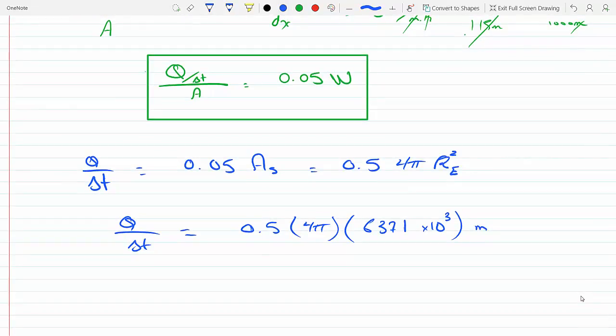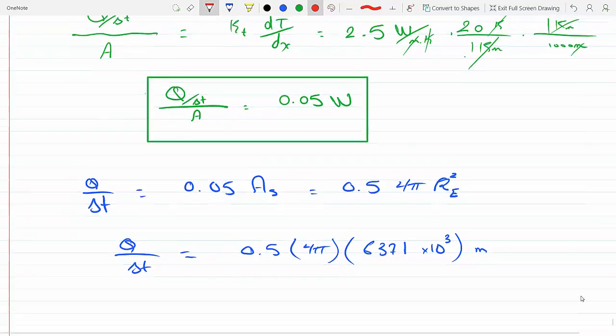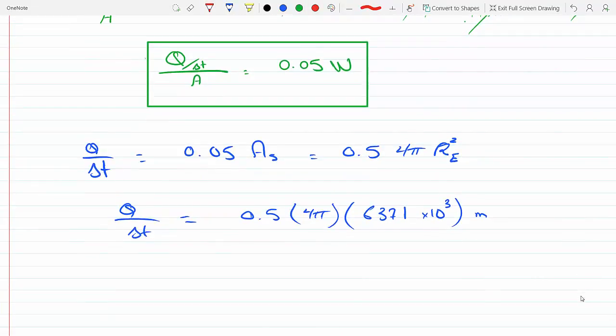So I would get, by the way, this here was per meter square, right, because we're dividing by the area. Yeah, so that's per unit area. Okay, so this is pi r squared, so squared, and this here is in watts.